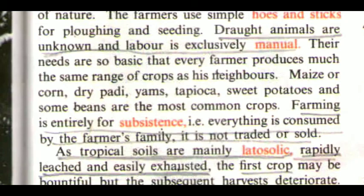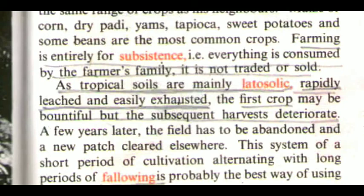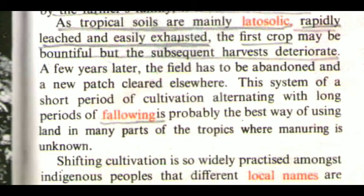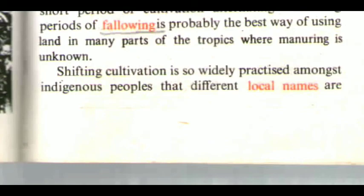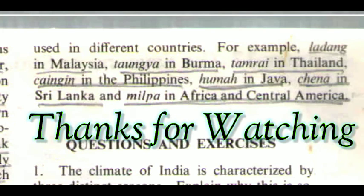As tropical soils are mainly lateritic, rapidly leached and easily exhausted, the first crop may be bountiful but subsequent harvests deteriorate. A few years later, the field has to be abandoned and a new patch cleared elsewhere. This system of a short period of cultivation alternating with long periods of fallowing is probably the best way of using land in many parts of the tropics where manuring is unknown. Shifting cultivation is so widely practiced amongst indigenous peoples that different local names are used in different countries: Ladang in Malaysia, Taungya in Burma, Tamrai in Thailand, Kaingin in the Philippines, Huma in Java, Chena in Sri Lanka, and Milpa in Africa and Central America.